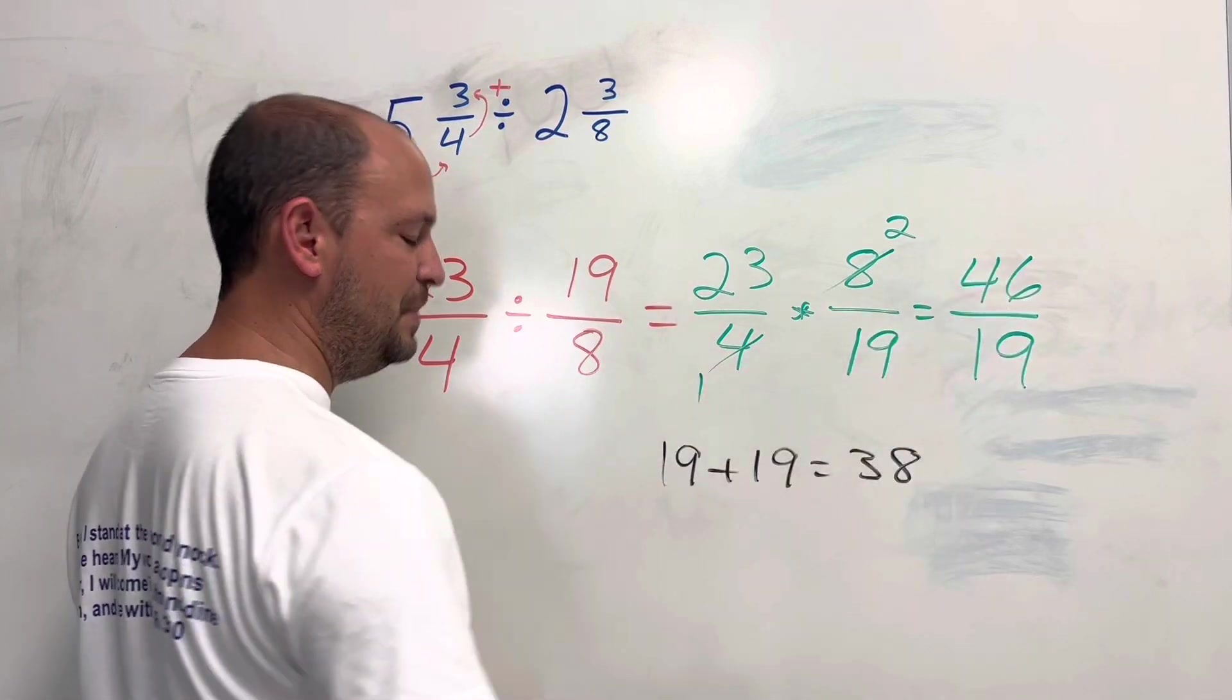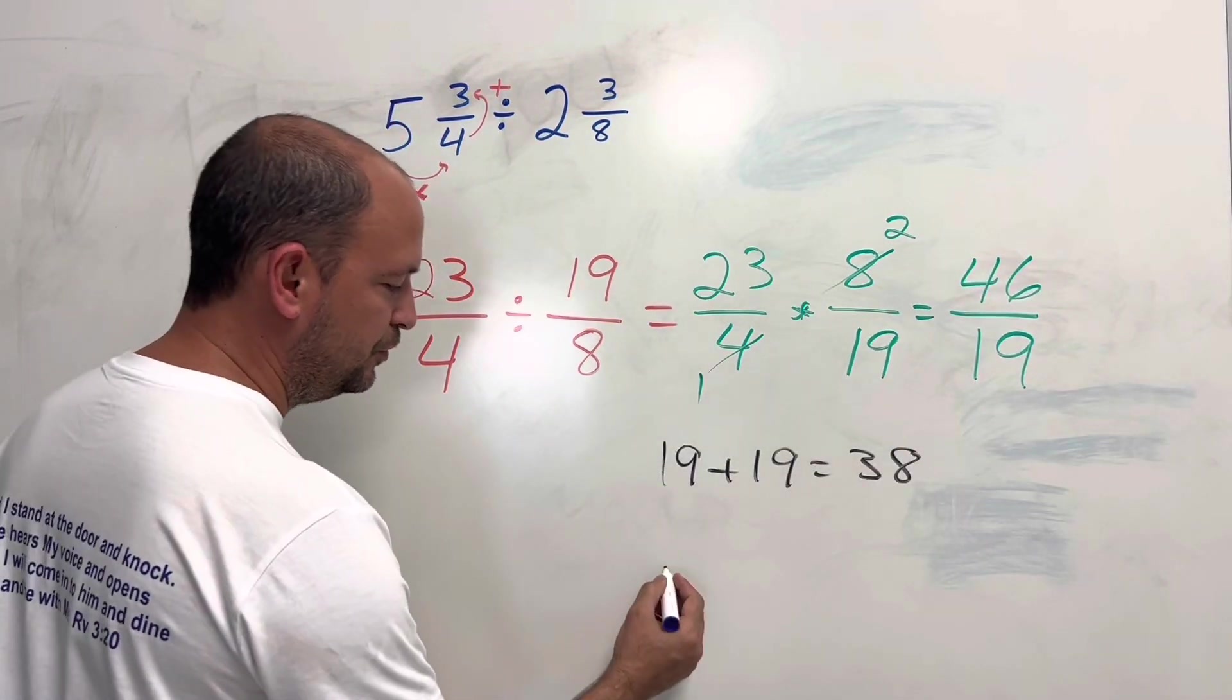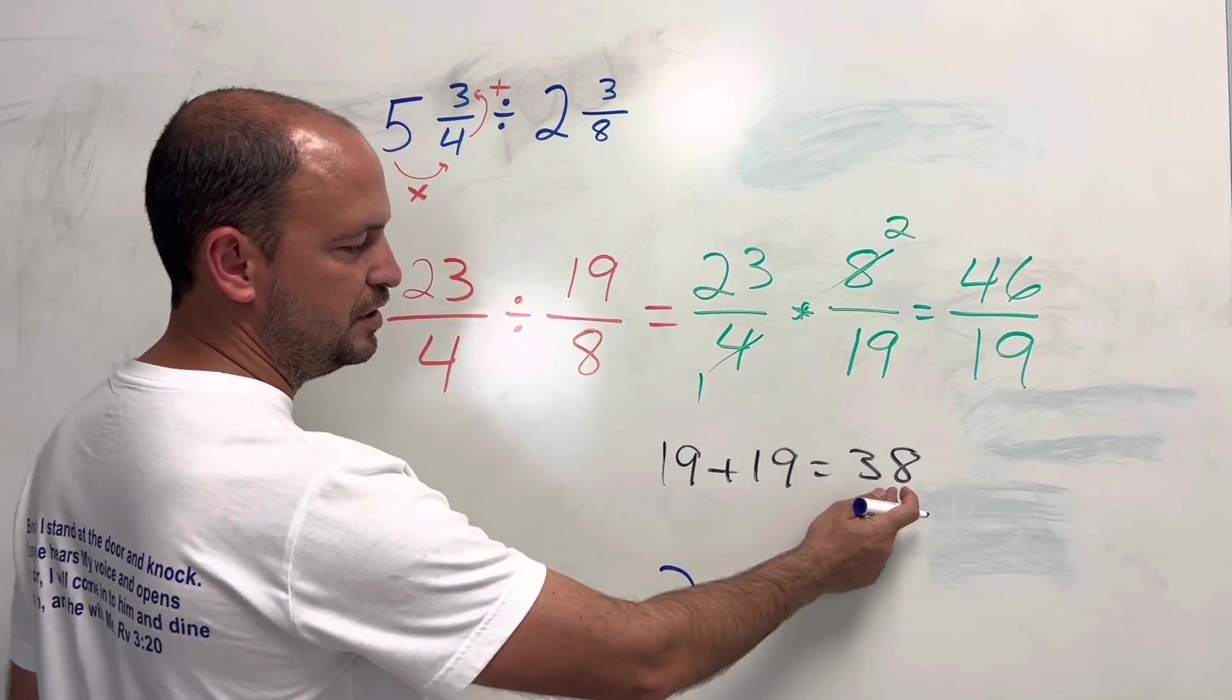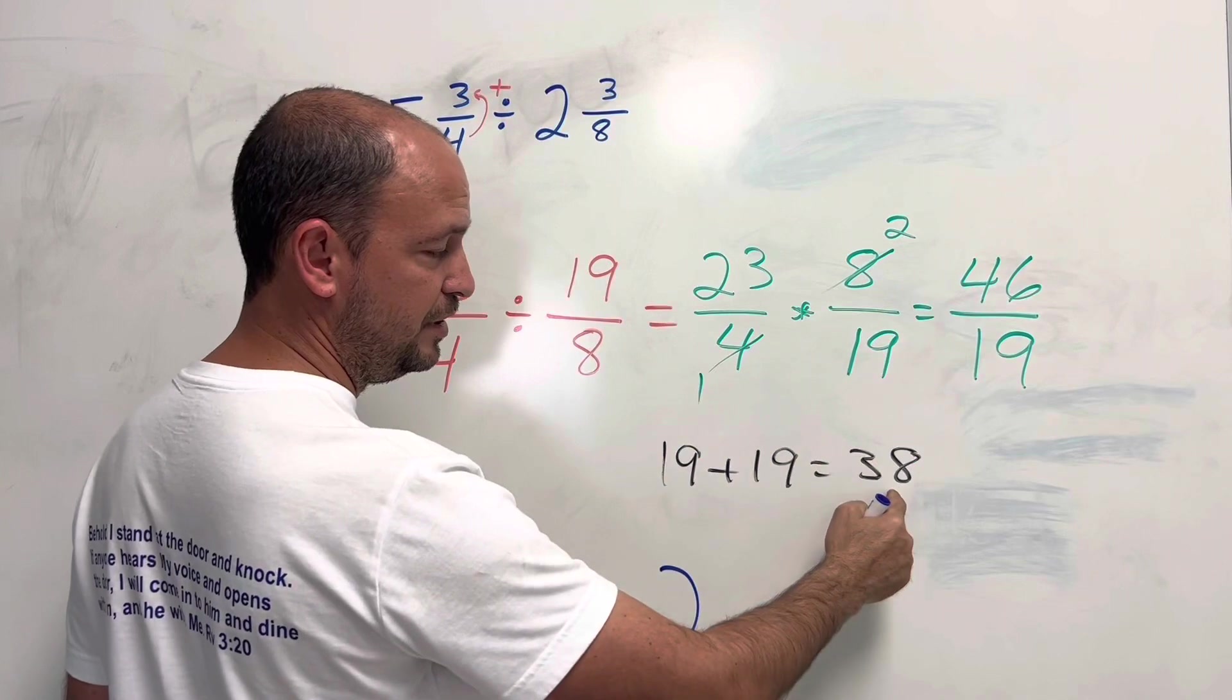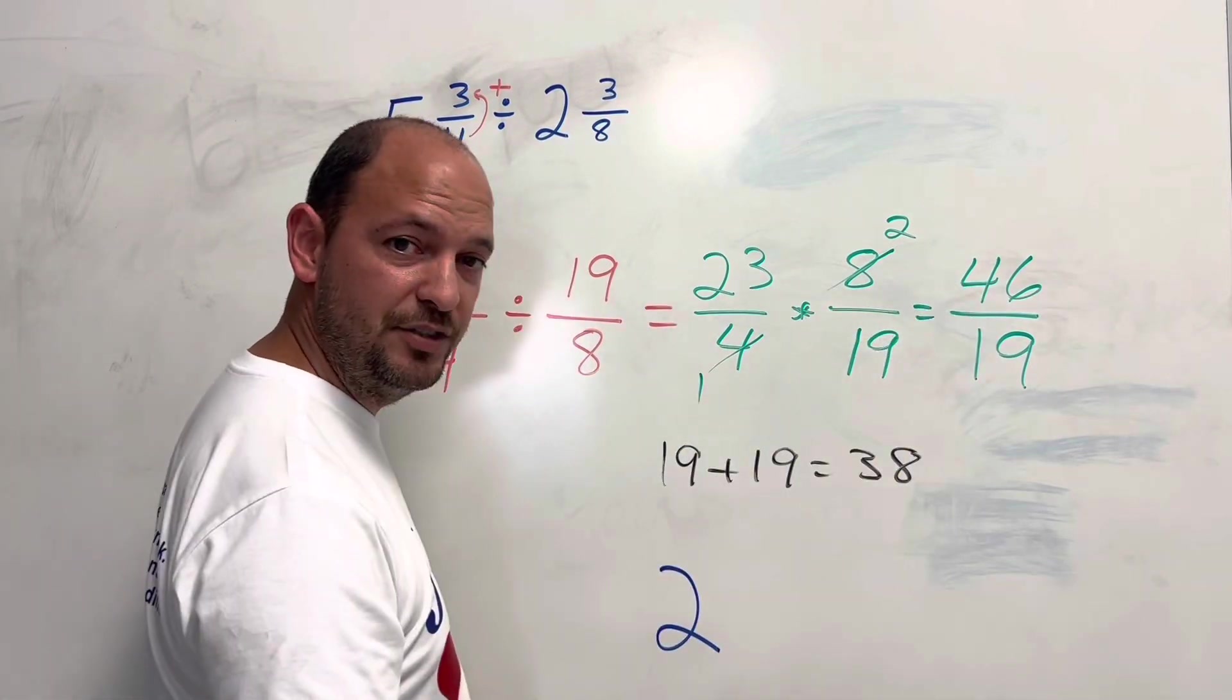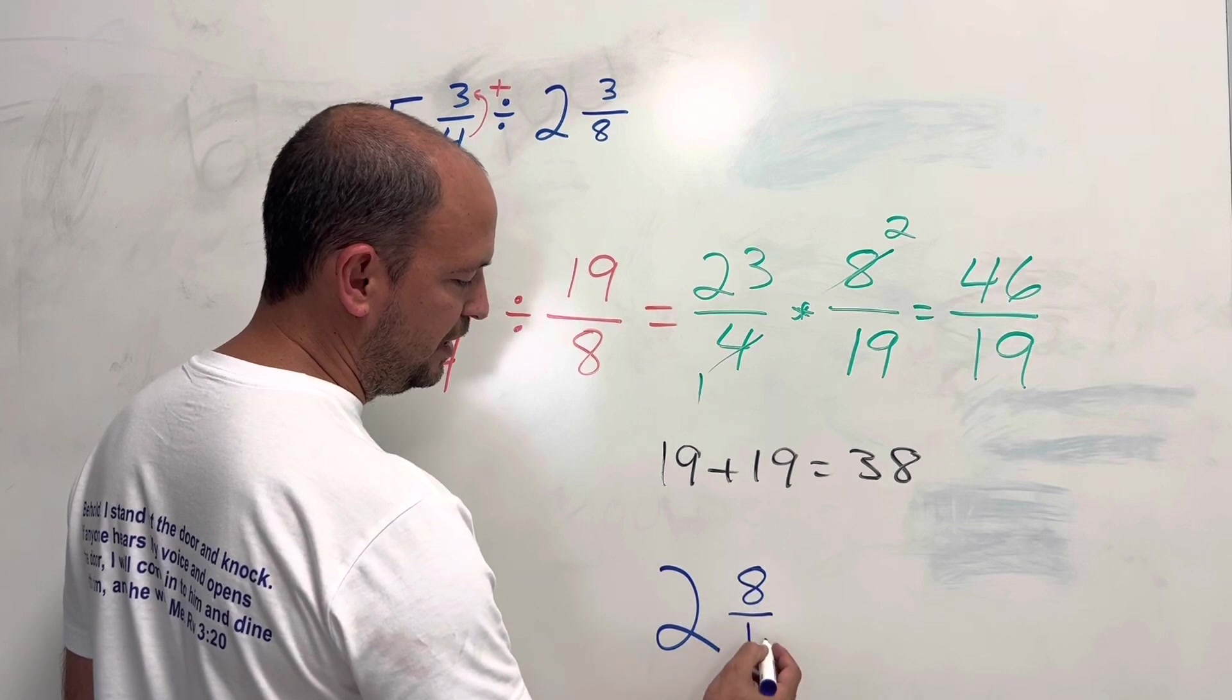So the answer in a mixed number would be 2. 2 19's here. And then the remainder, which is 8, 8 divided by 19.